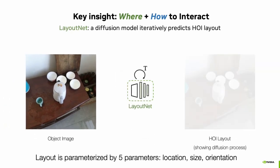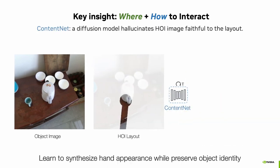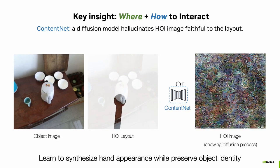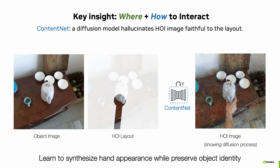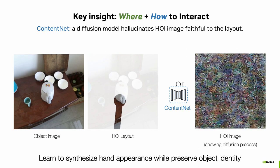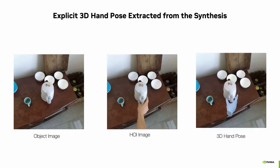We first use a layout net to generate a HOI layout that specifies spatial arrangement, including size, location, and approaching actions. Then, conditioned on the predicted layout, we use a content net to hallucinate the appearance. The model learns to synthesize the hand appearance while preserving object identity. The generated image is informative such that explicit 3D hand pose can be directly extracted.